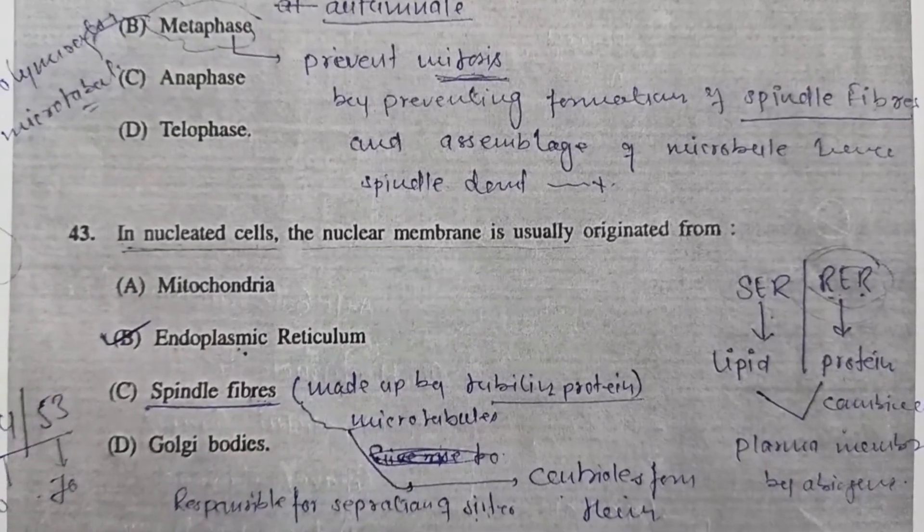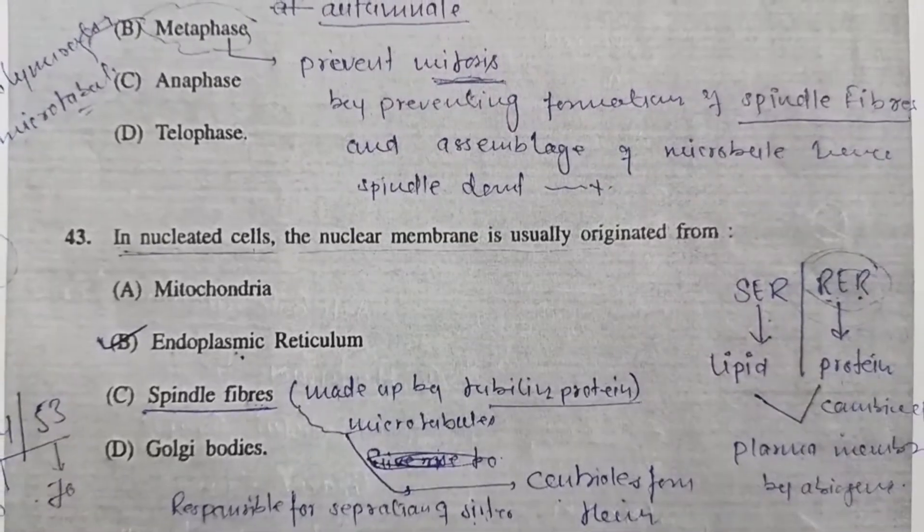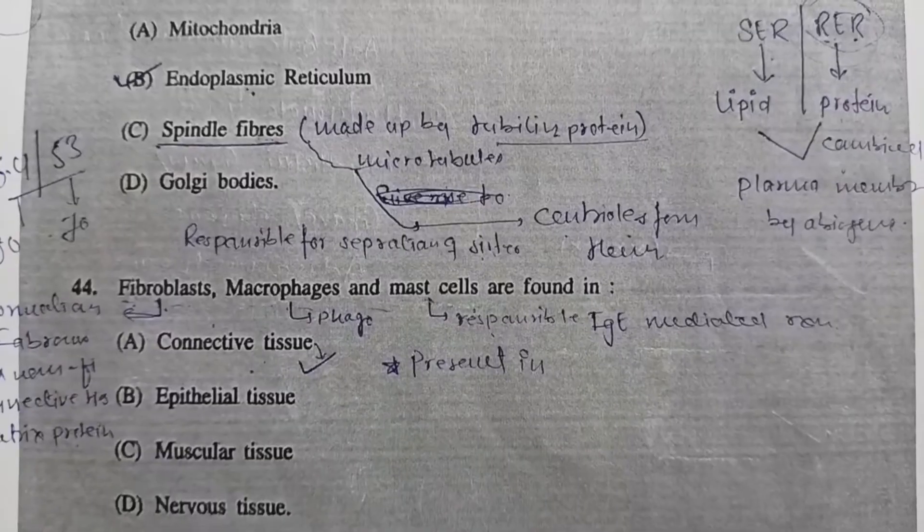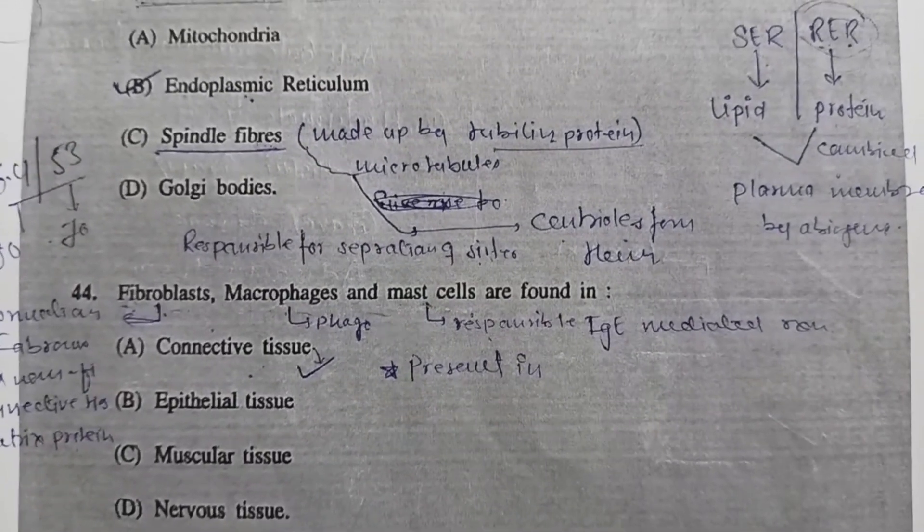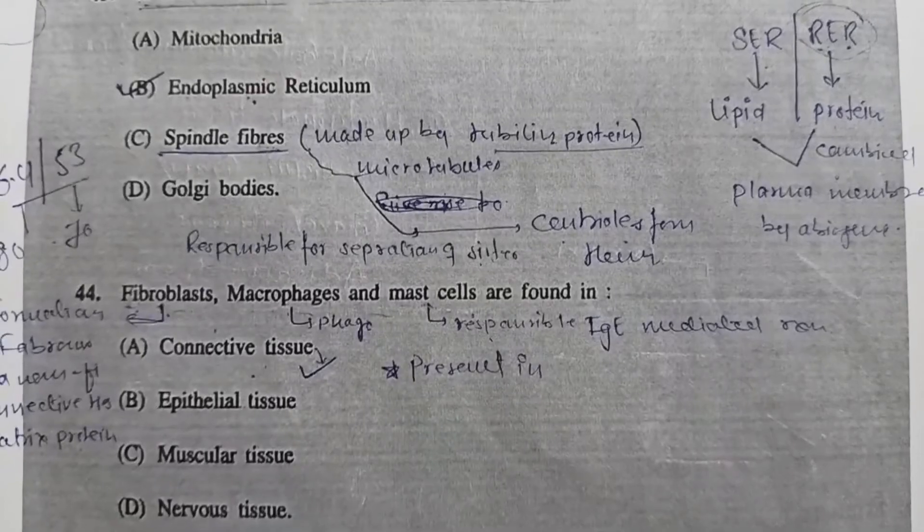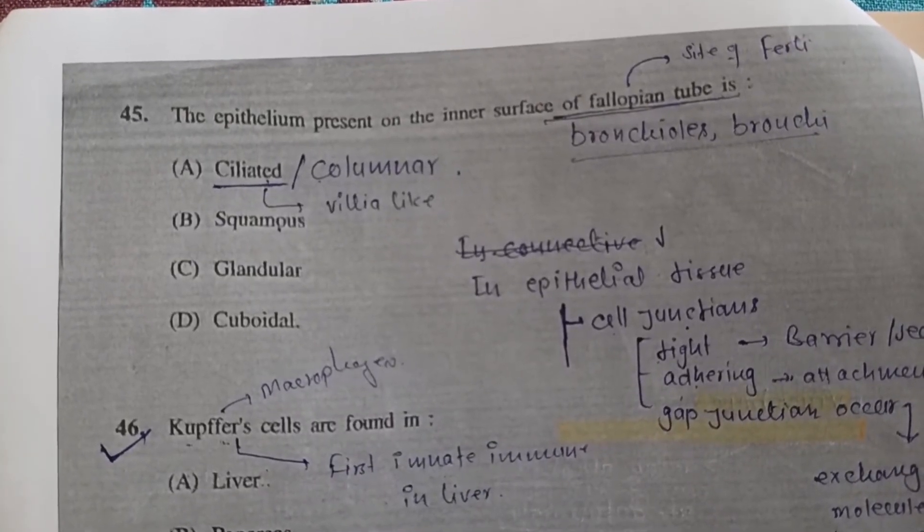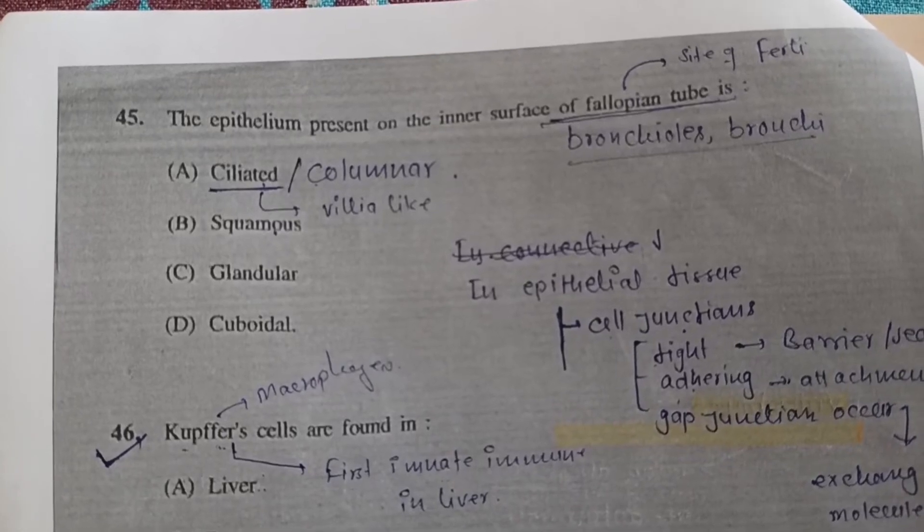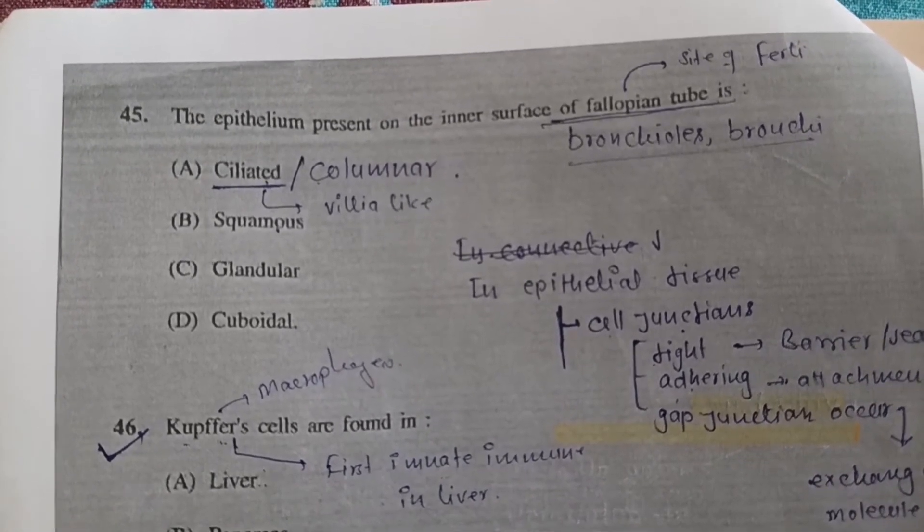Question 42: Colchicine stops cell cycle division in - B, metaphase. Question 43: In nucleated cells, the nuclear membrane usually originates from - B, endoplasmic reticulum. Question 44: Fibroblasts, macrophages, and mast cells are found in - Option A, connective tissues.